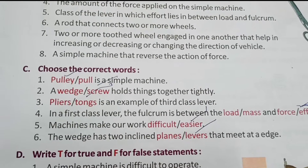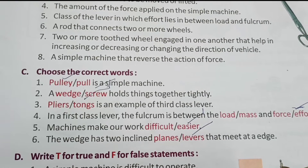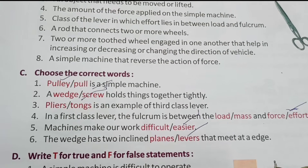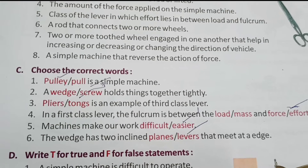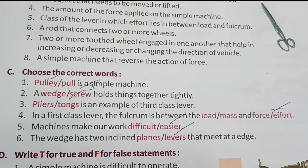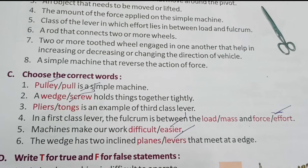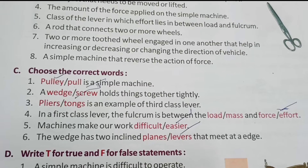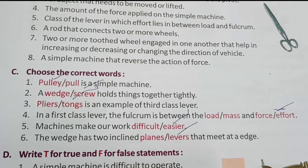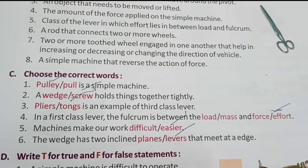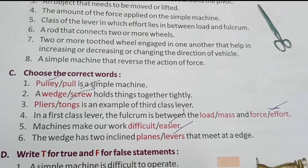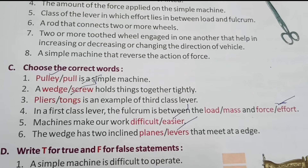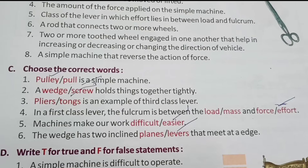Choose the correct words. One: Pulley is a simple machine — answer is pulley. Two: A screw holds things together tightly — answer is screw. Three: Pillars or tongs is an example of third class lever — answer is tongs. Four: In a first class lever, the fulcrum is between the load and force or effort — answer is force or effort. Five: Machines make our work difficult or easier — answer is easier. Six: The wedge has two inclined planes or levers that meet at an edge — answer is inclined planes.